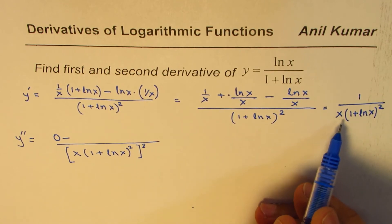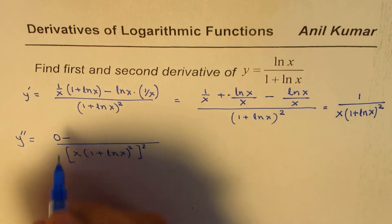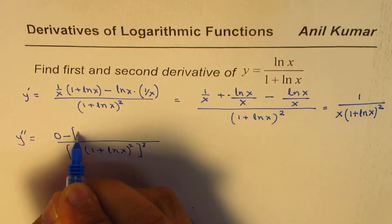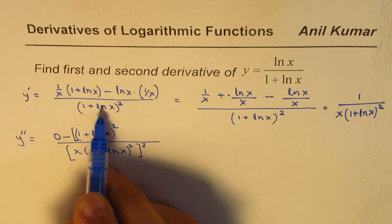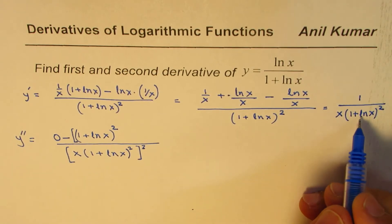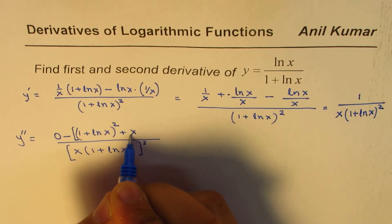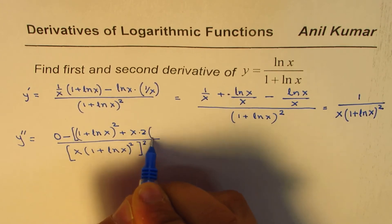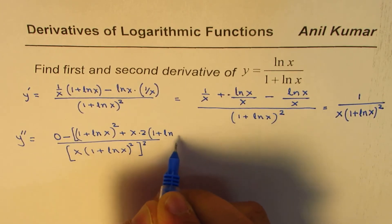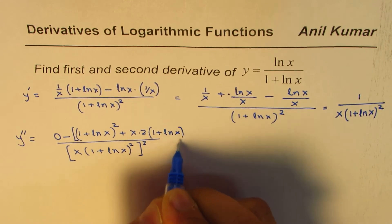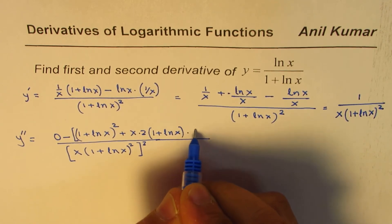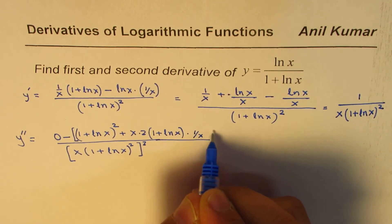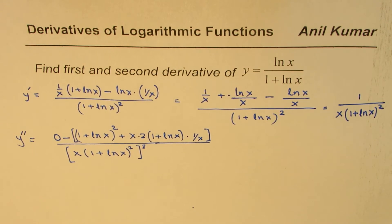So we have 0 minus 1 times the derivative of the denominator, which we find using the product rule. The derivative of x is 1, giving (1 + ln(x)) whole squared, plus x times 2(1 + ln(x)) times the derivative of the inside function, which is 1/x.